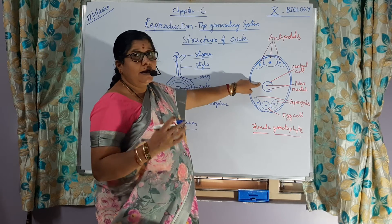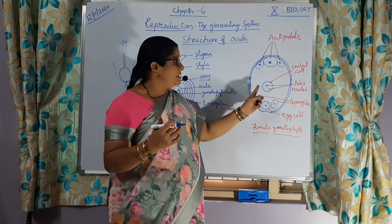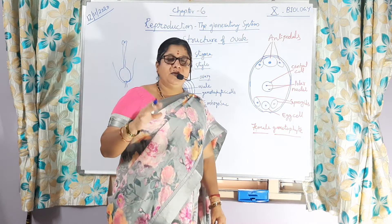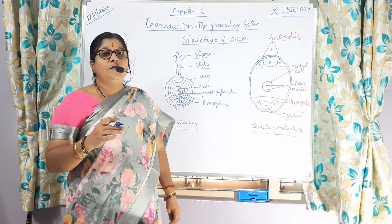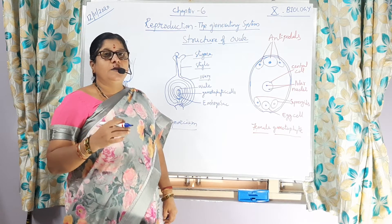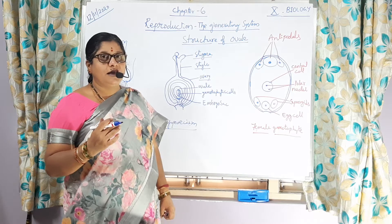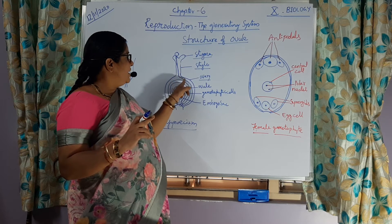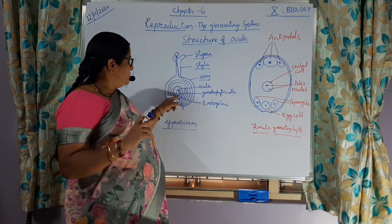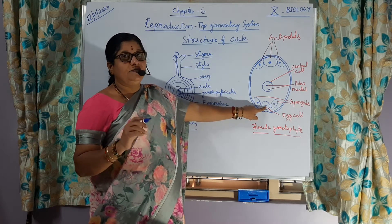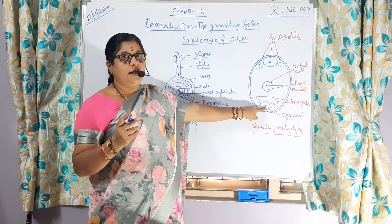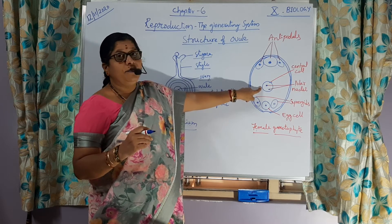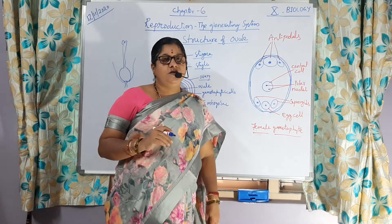So, a diploid zygote is formed after the first fertilization. The second nucleus reaches through the micropylar region to the central cell, where it fuses with the polar nuclei — the condition of that cell is already diploid. So, second fertilization happens. This is called double fertilization. Almost all flowering plants show this common characteristic feature of double fertilization. First fertilization: the main nucleus fuses with the egg cell. Second fertilization: the other nucleus fuses with the polar nuclei of the central cell. That is why it is called double fertilization.